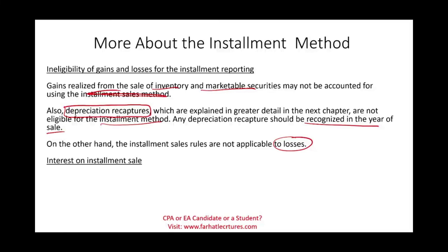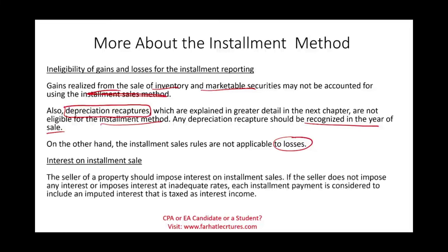Regarding interest on installment sales: every time we make a payment into the future, part of it is interest. The seller of the property should impose interest on installment sales. If the seller does not impose interest or imposes an inadequate rate, each installment payment is considered to include imputed interest, which must be separated. Part of the payment is gain and part should be considered interest, because it's a loan and loans involve interest. We'll talk about imputed interest shortly.